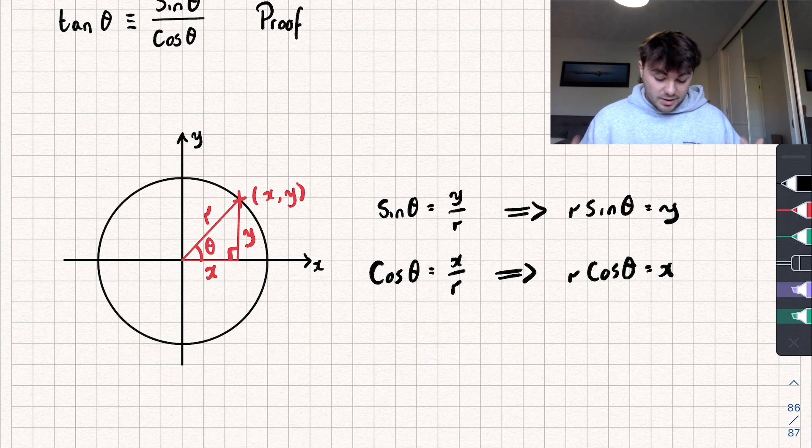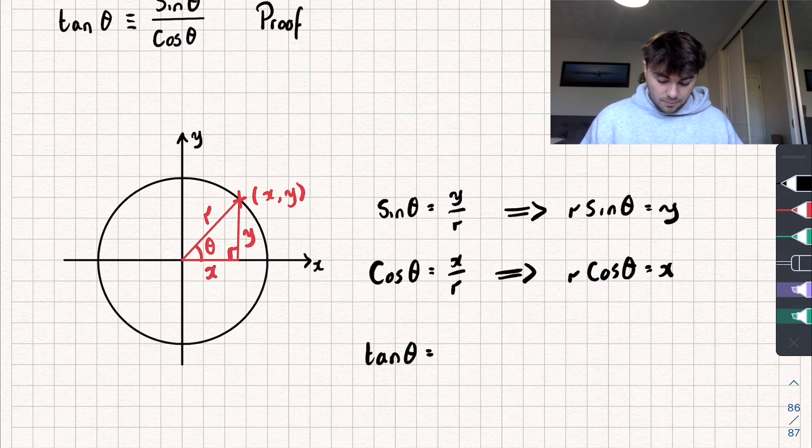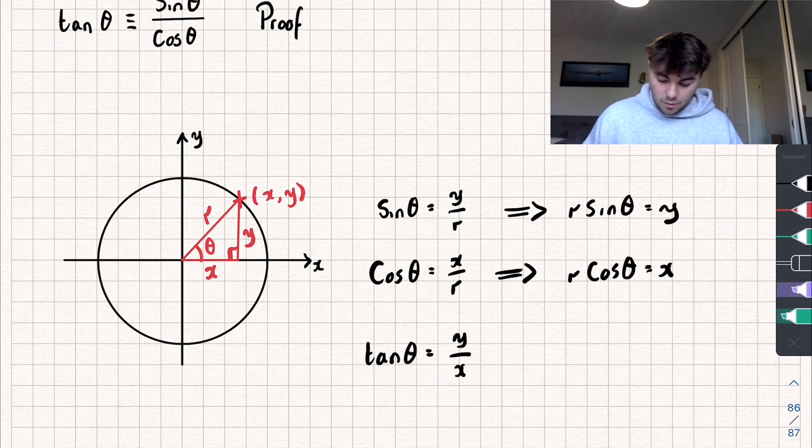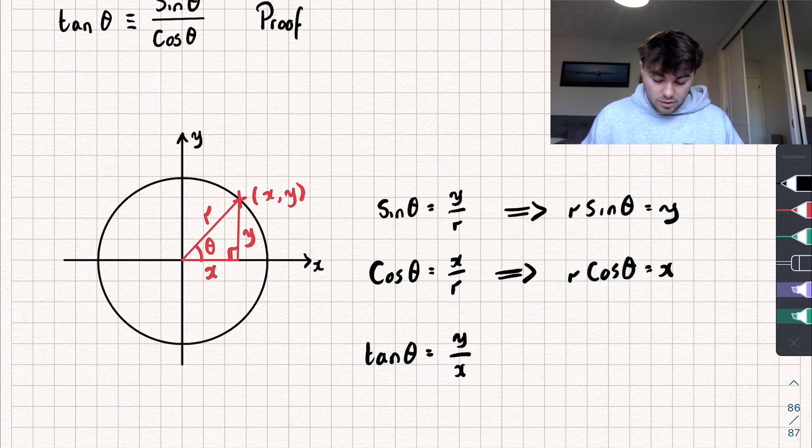And finally let's say that well what is tan of our angle? So tan of theta, okay like that, that's equal to our opposite side divided by our adjacent. Okay so that's equal to y divided by x. Now we know a value for y and x. We know that y is equal to r sine of theta and we know that x is equal to r cos of theta.